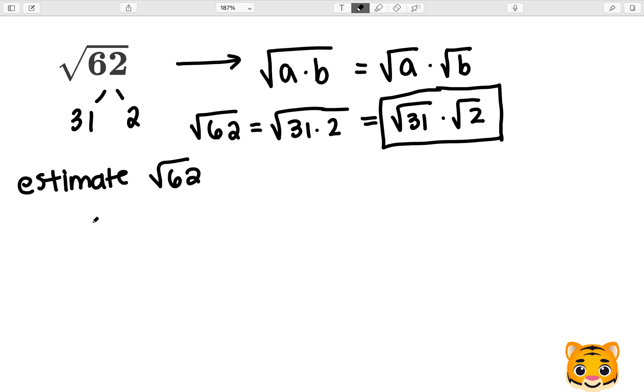We can estimate the square root of 62 to the nearest whole number by doing the following. First we can think about what perfect squares are near 62. A perfect square that's near 62 would be 7 squared, which gives us 49, and also 8 squared, which gives us 64.